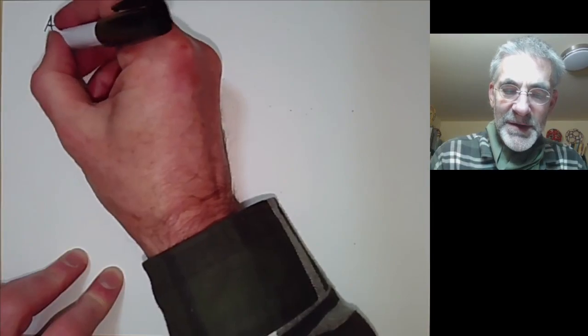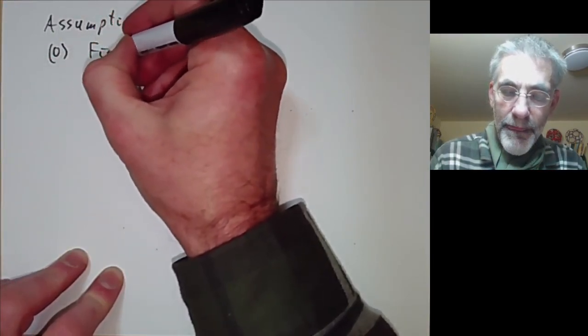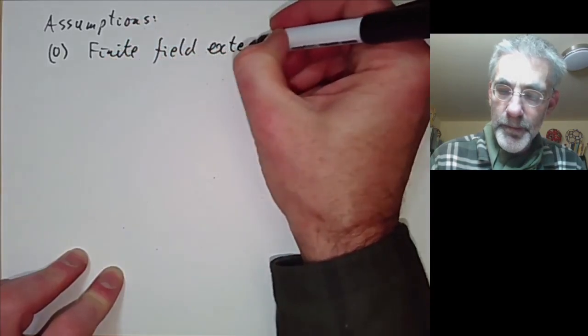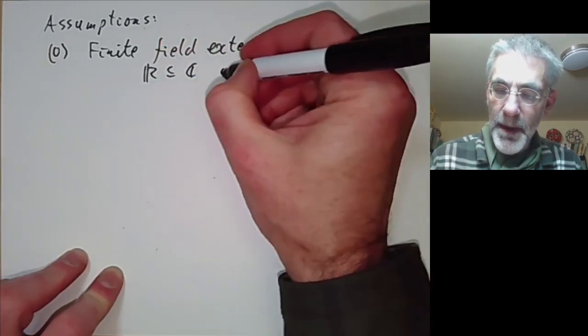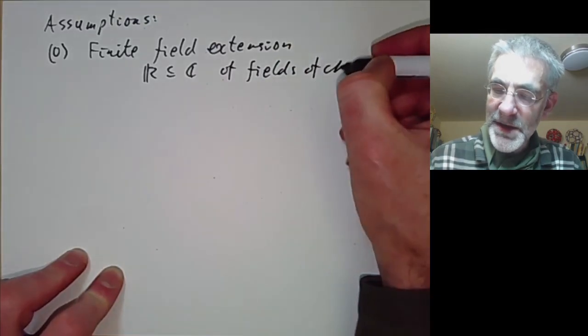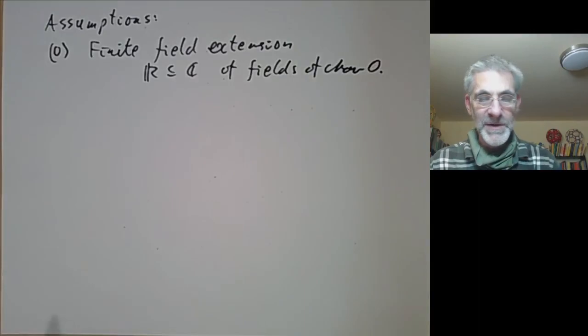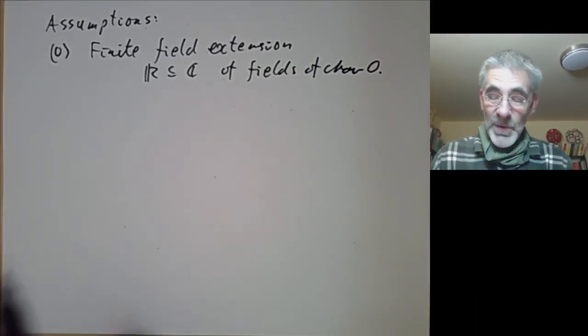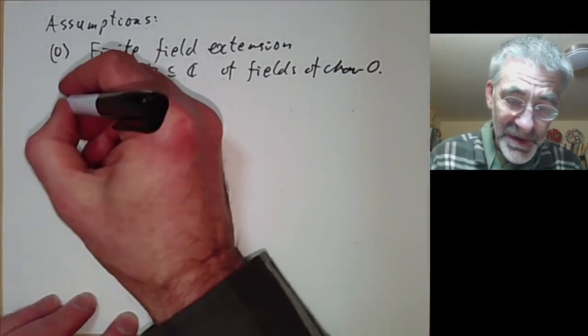Our assumptions are going to be as follows. The zero assumption is that we have a finite field extension R contains C of fields of characteristic zero. I'm assuming characteristic zero because I've got a headache trying to work out whether or not this is true for positive characteristics. I'm just going to assume characteristic zero because this makes it easier and is the only case I need.